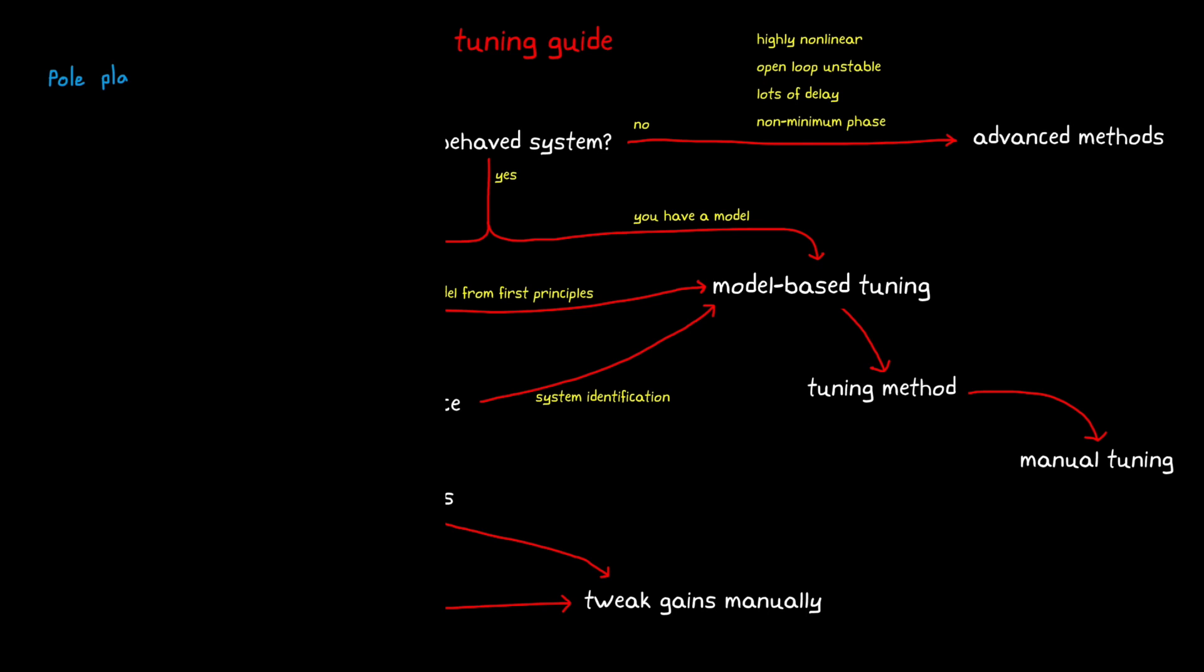First, we can determine where we want to place the closed-loop poles so that the dominant poles produce the system stability and the response that we're looking for. Solving the equation for the proper gains with pole placement is pretty straightforward. However, the downside with this method is that it requires you to know where you want the poles to be and how the zeros in the system are going to affect the response.